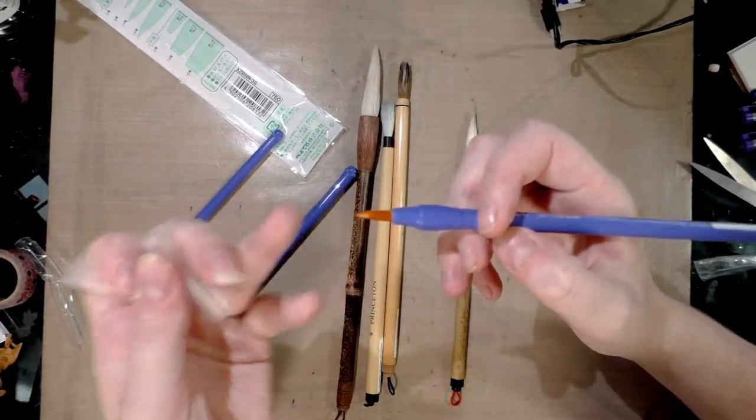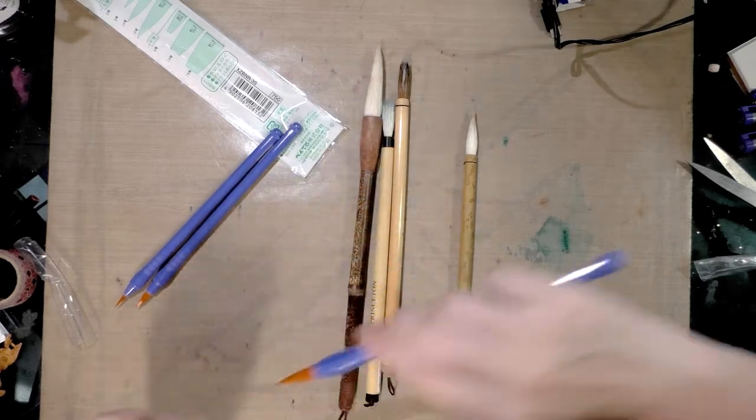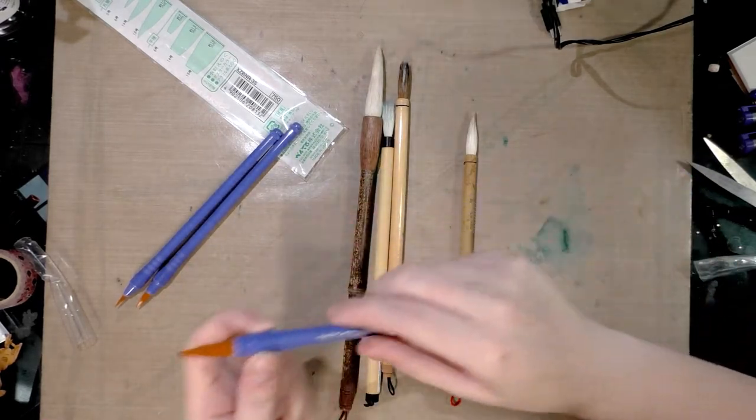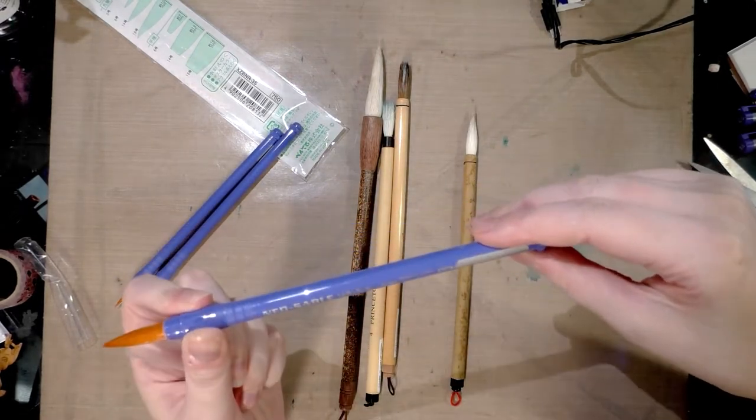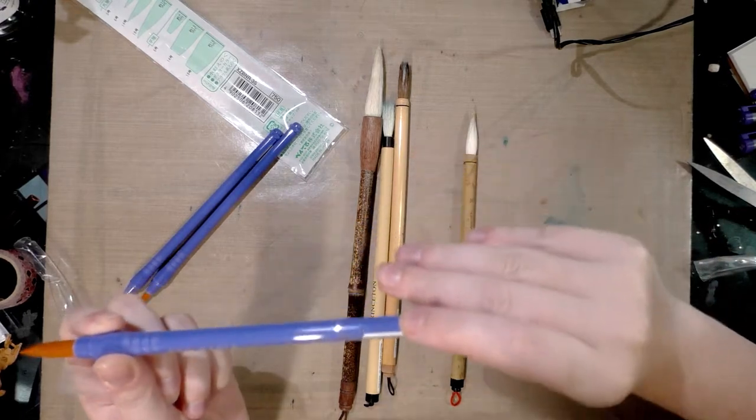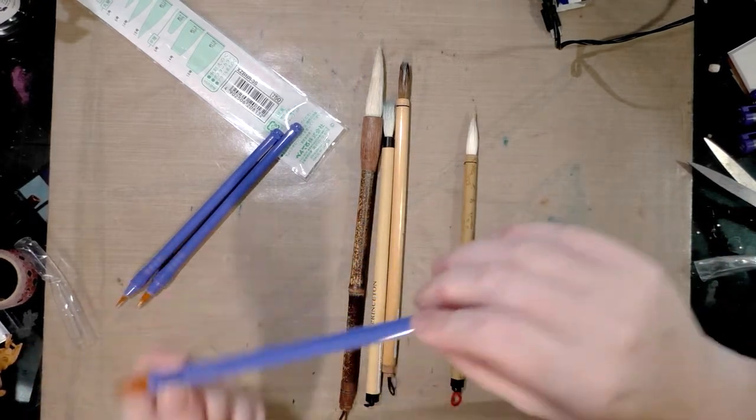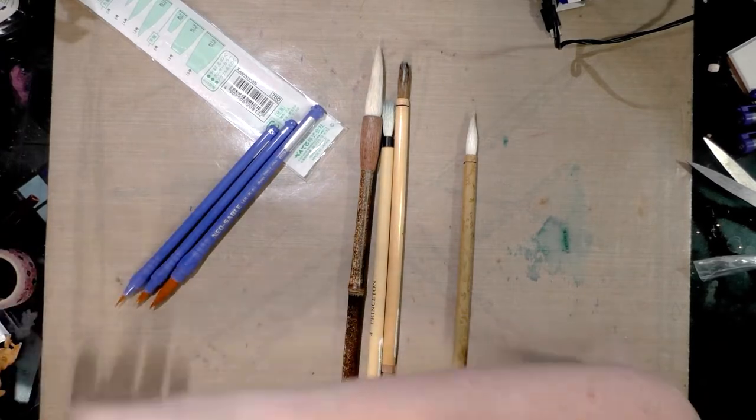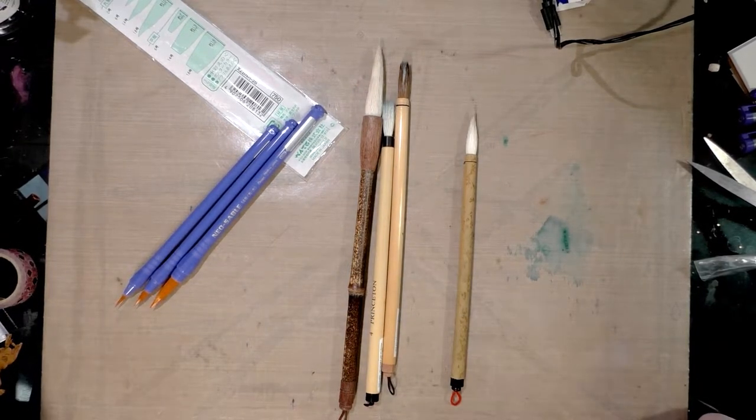And that is what the smallest Neo Sable looks like. And that is what the next smallest Neo Sable looks like. And then that's what the largest Neo Sable looks like. And you even have a place to write your name on these. So I have a feeling these are intended for like younger students, maybe grade school students.